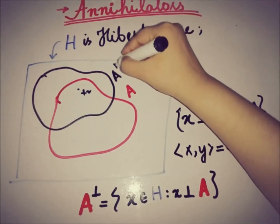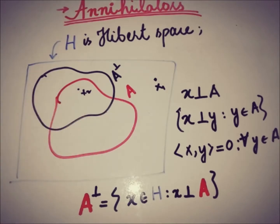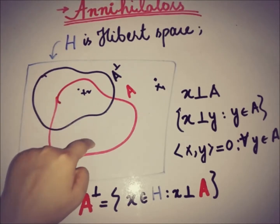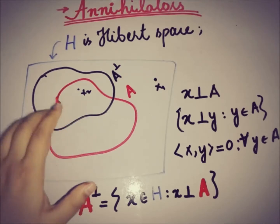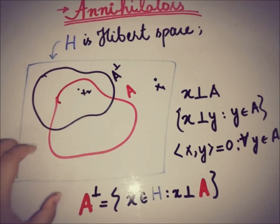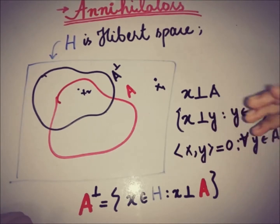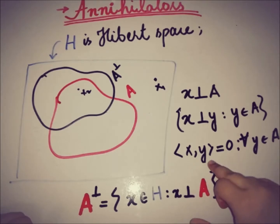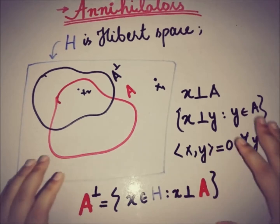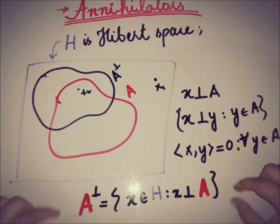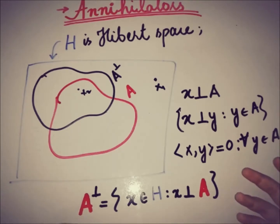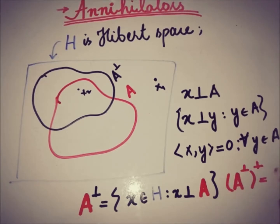The annihilator of A can be represented as a set intersected with A. To summarize: for any element X of H, X belongs to the annihilator if the inner product with every element of A equals zero. We can also define a double annihilator — the annihilator of the annihilator — denoted A with a double perpendicular sign.